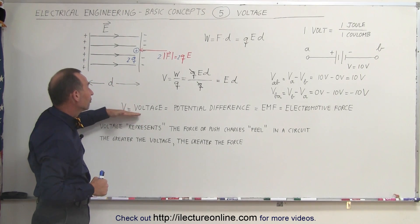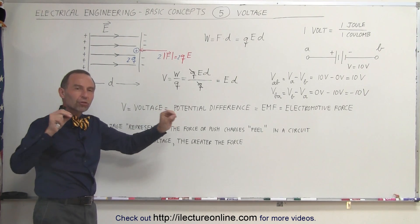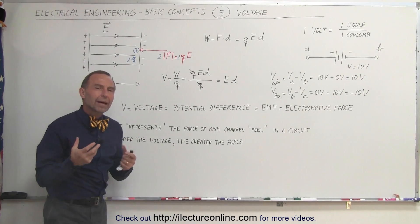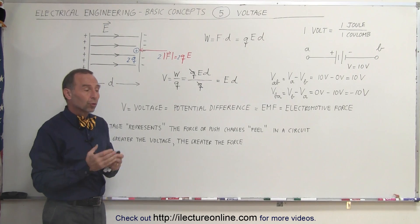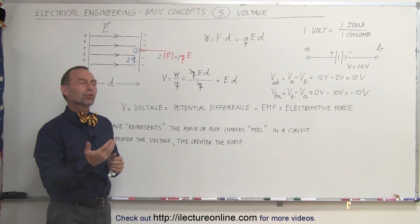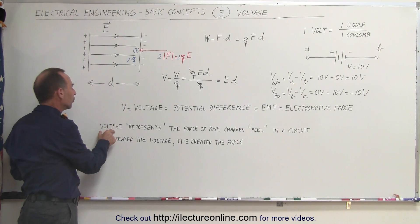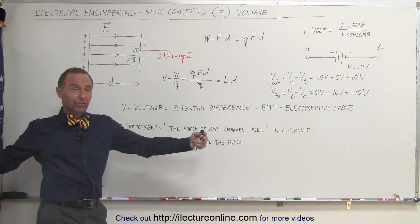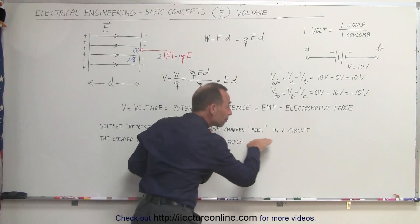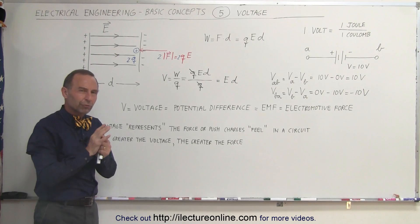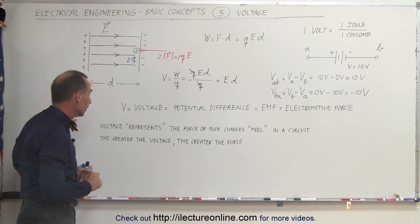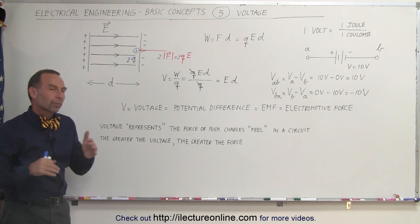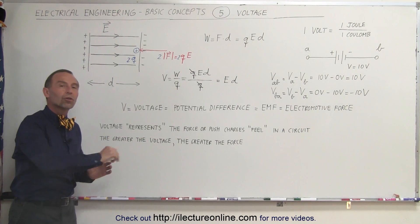Another way of looking at voltage: voltage is equal to the potential difference — the voltage difference between two points on a circuit. Sometimes it's also called the EMF or electromotive force. The voltage in a battery determines how much push charges feel to move through the circuit. The bigger the voltage difference, the more push that charge is going to feel. Think of charges being pushed through the circuit by the voltage difference — the greater the voltage, the greater the force or push that the charges feel. The bigger the potential difference, the more push to get charges around the circuit.